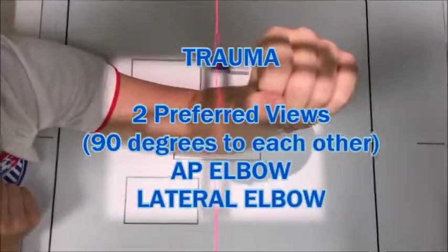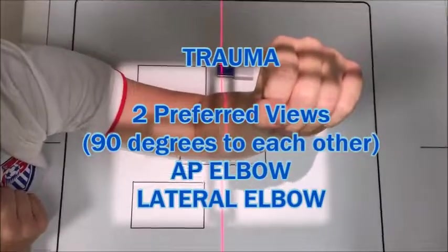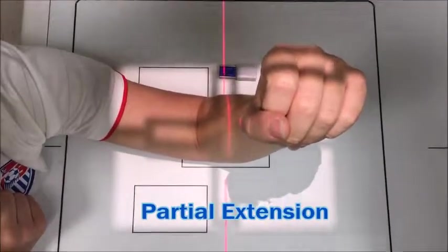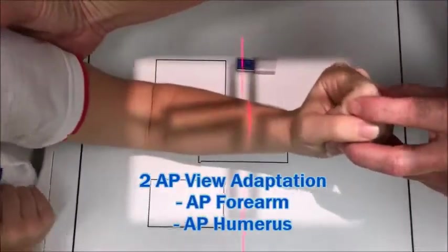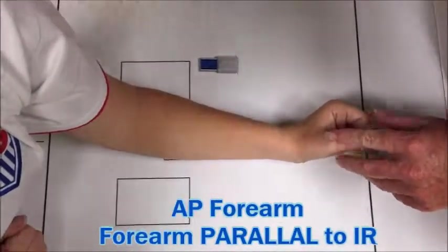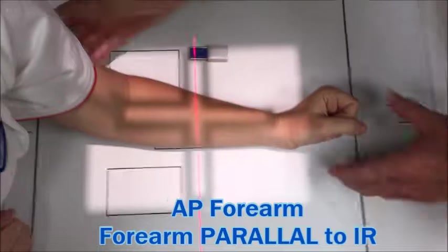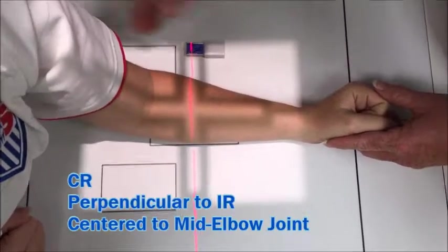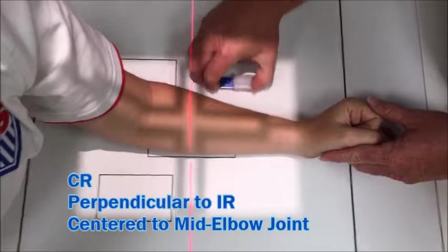For trauma we have two view positioning. If the patient can't bend their elbow, you need to try to get the head of the radius still. Have the patient stand, put the forearm down straight, try to get the central ray into the radial head as close as possible.